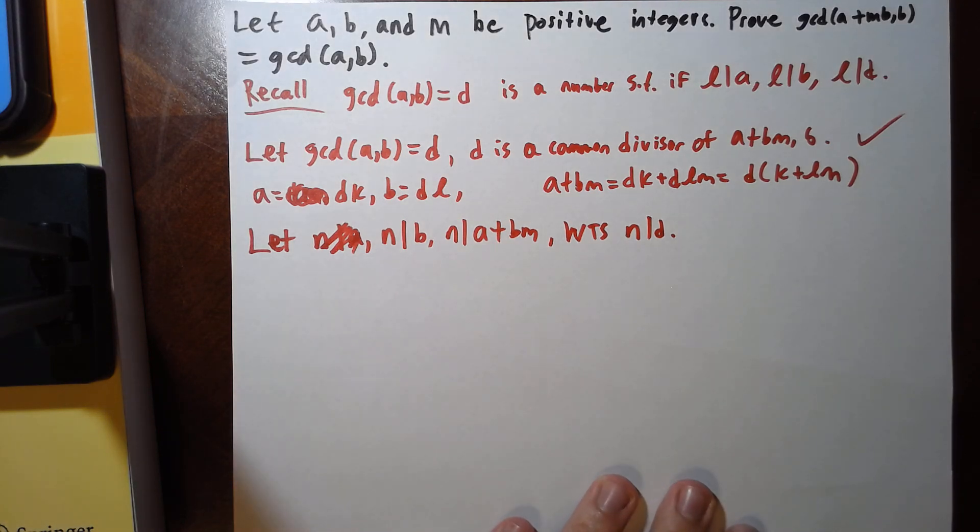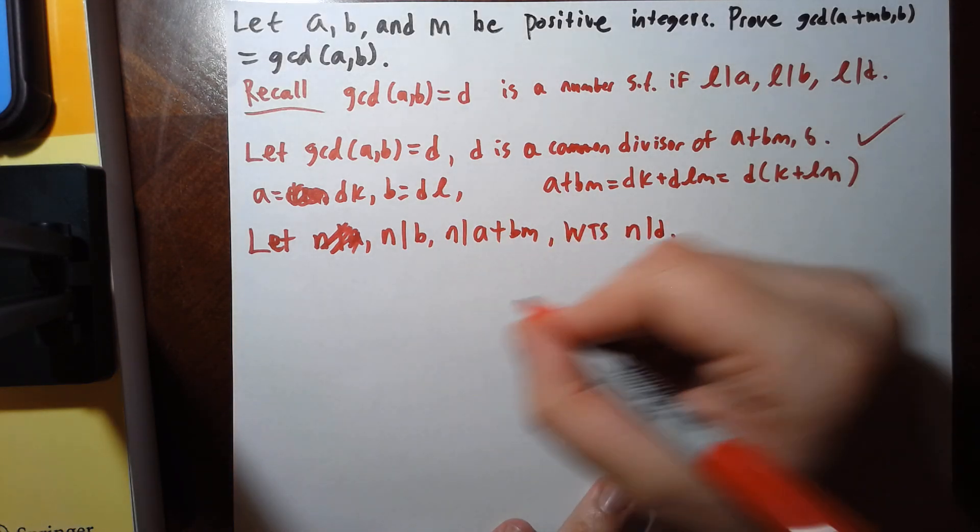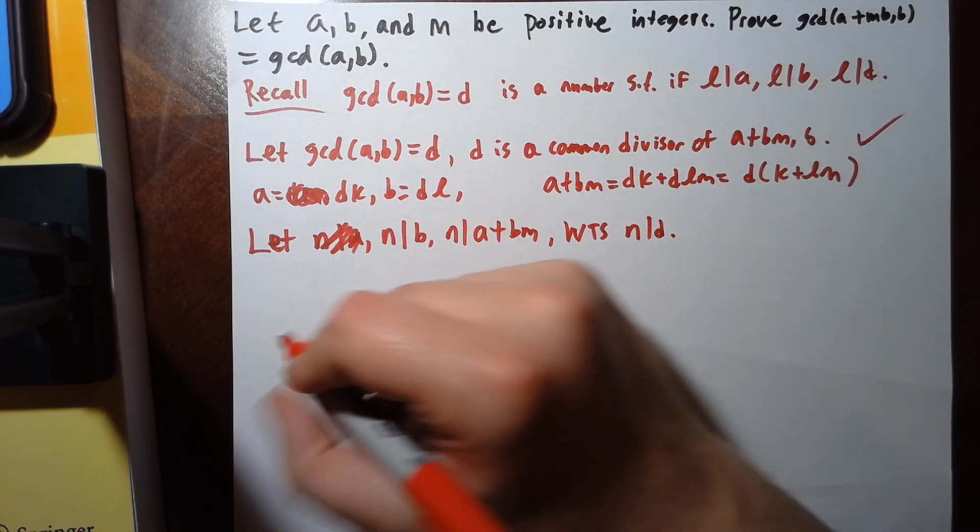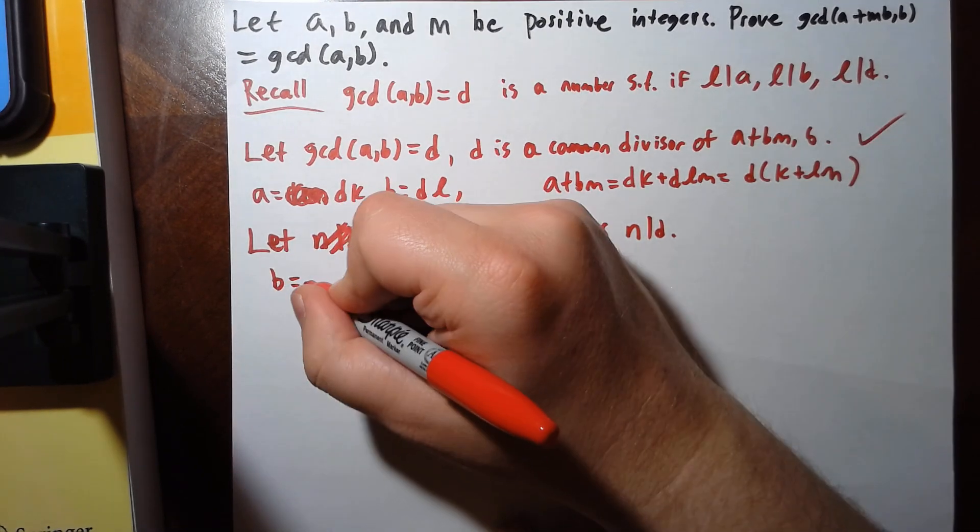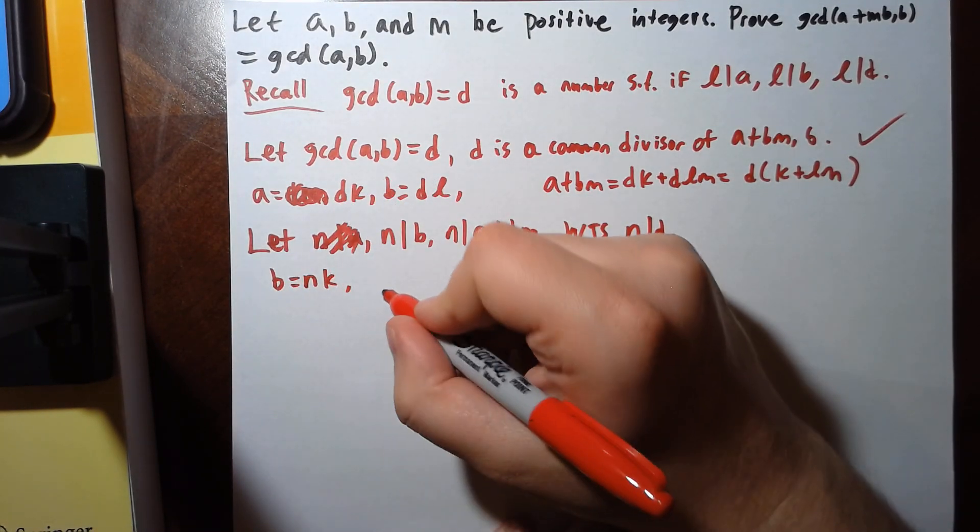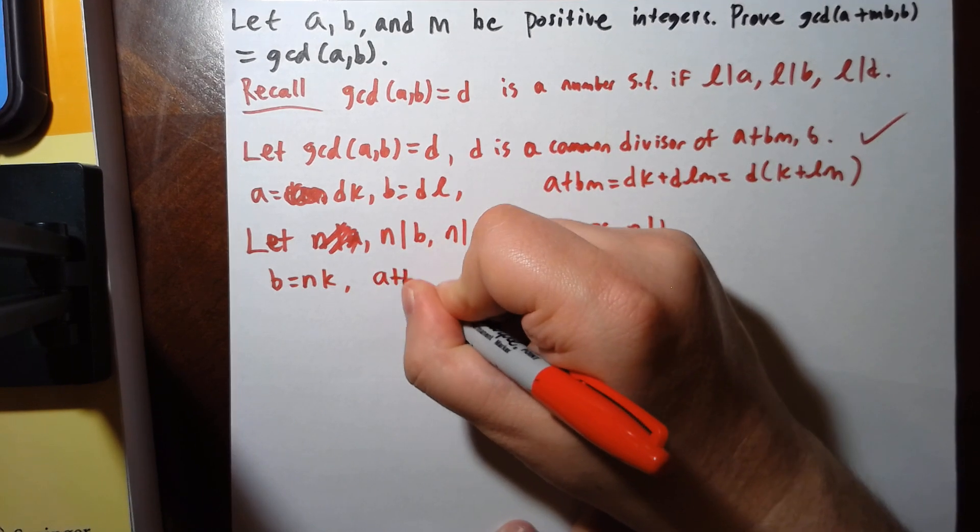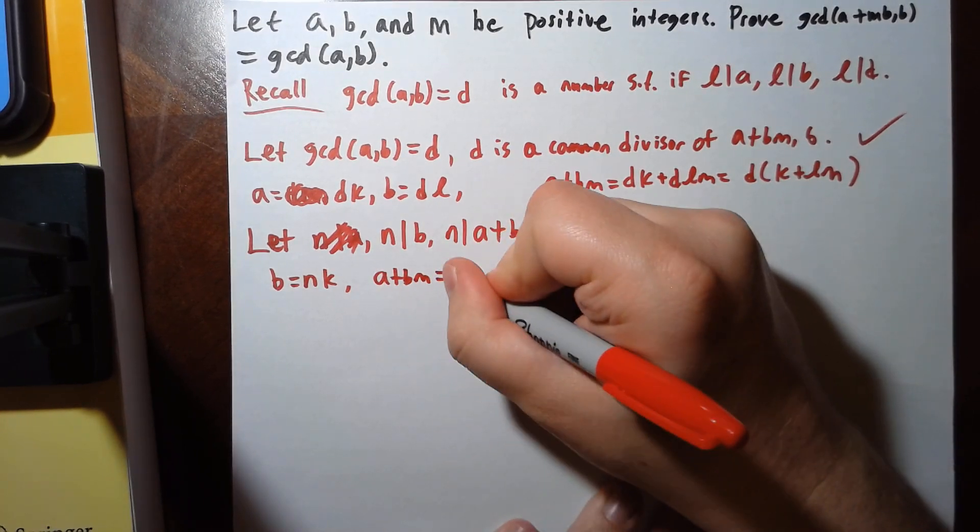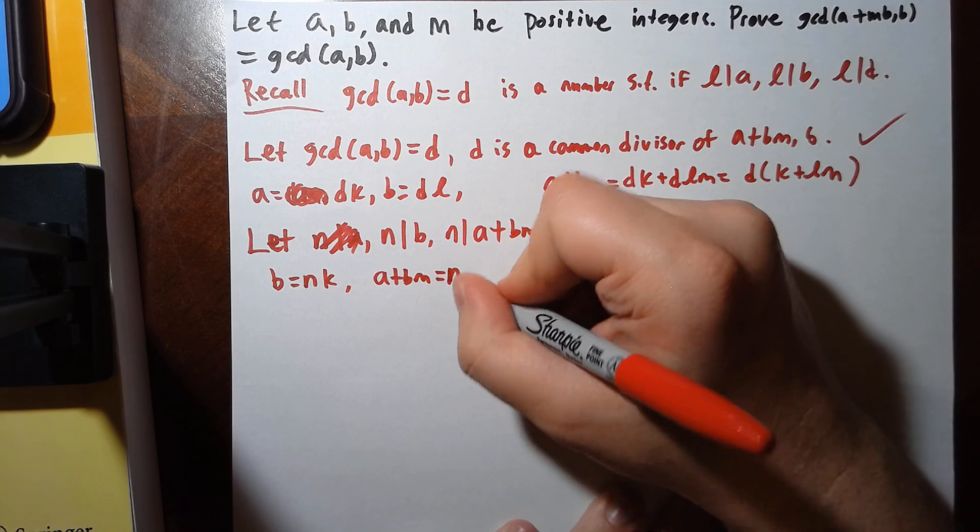Well, how can I do this? Since n divides b, I'm going to say b is nk, and a plus bm is n times l.